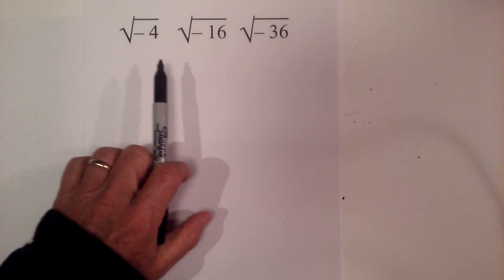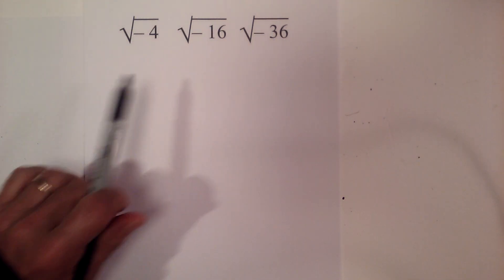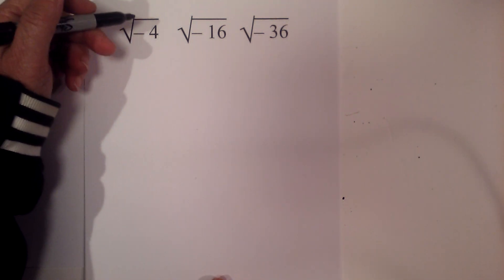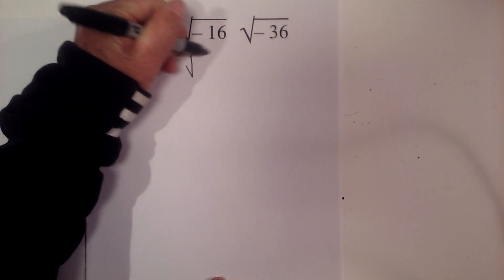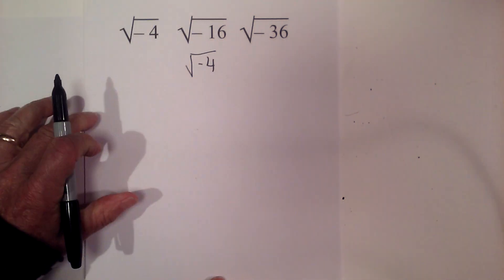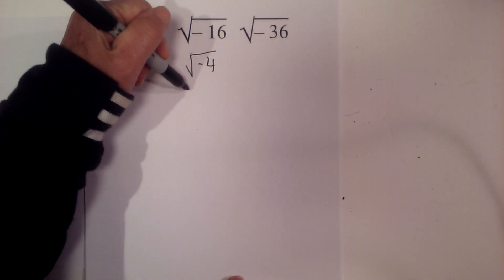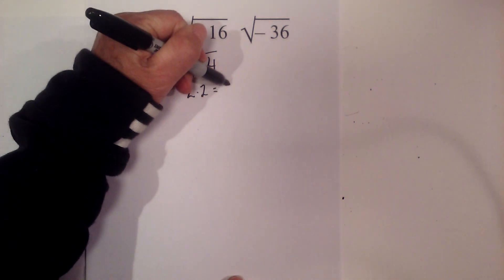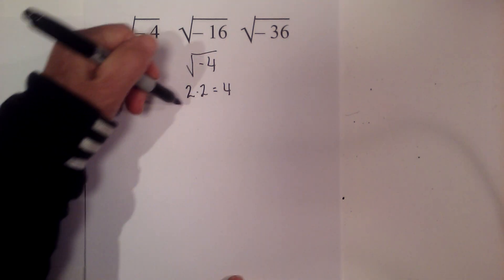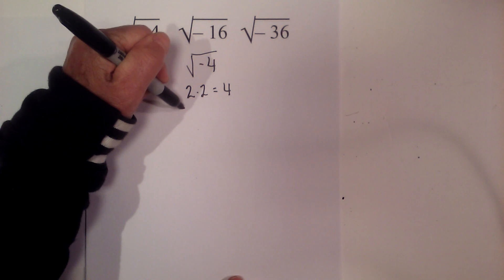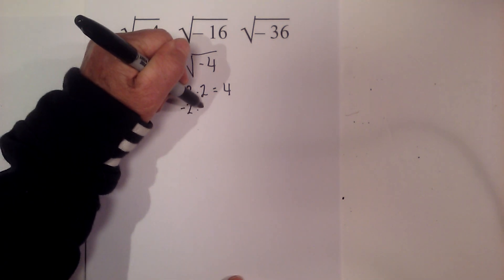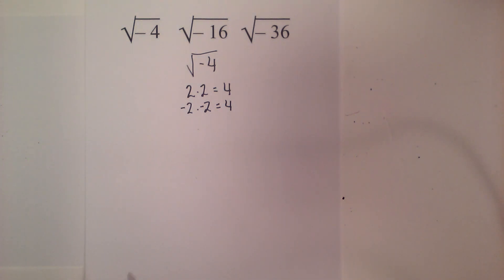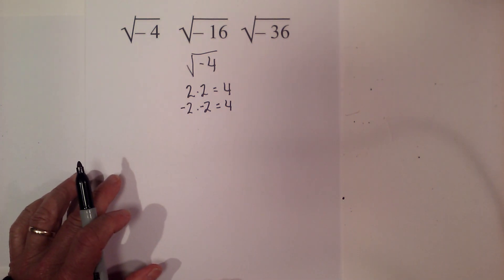In this video let's learn how to simplify negative square roots. Let's start with a very basic one: the square root of negative 4. Well, technically there's not a real solution to that, because the square root of 4 is 2 — since 2 times 2 equals 4 — but negative 2 times negative 2 also equals 4, so there's really not a real solution.